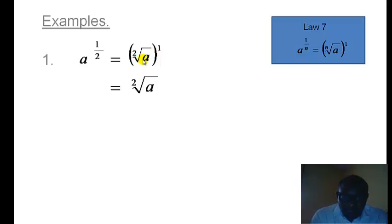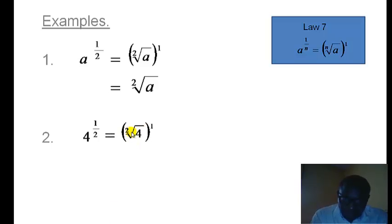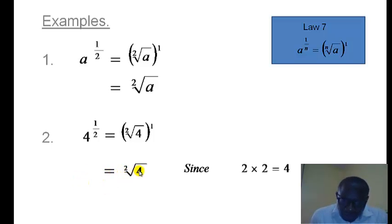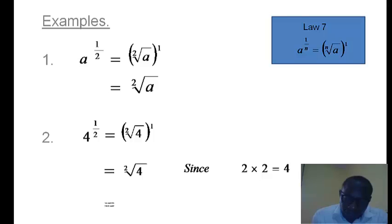Whenever we have a number with index 1, it is the same as writing the number without the index. In example 2, 4 raised to power 1 over 2 equals the second root of 4. The second root of 4 means the number that we can multiply by itself 2 times to give 4, which is 2 multiplied by 2. So the second root of 4 is equal to 2.